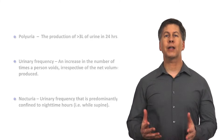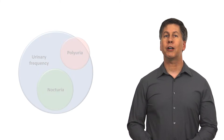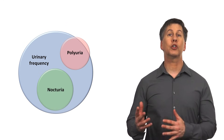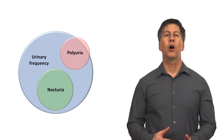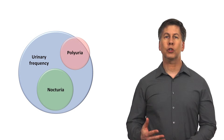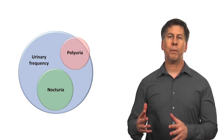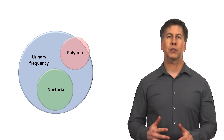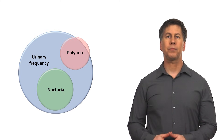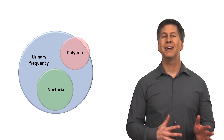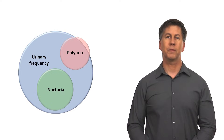Another way to look at this is with a classic Venn diagram. Urinary frequency is a more common problem than either nocturia or polyuria. All of nocturia is a subset of frequency. Nocturia and polyuria are also subsets of frequency, but nocturia and polyuria themselves essentially don't coexist.